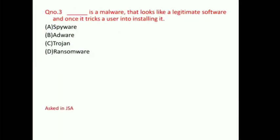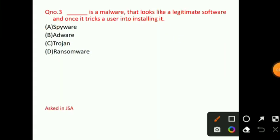Question number 3: Dash is a malware that looks like a legitimate software and once it tricks a user into installing it, it turns out to be malware. So the right answer for question number 3 will be option C, that is Trojan. This question has also been asked in the JSA.